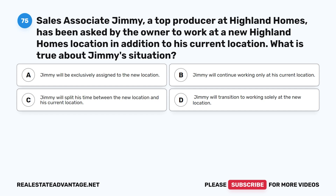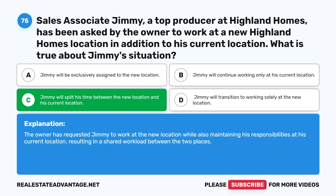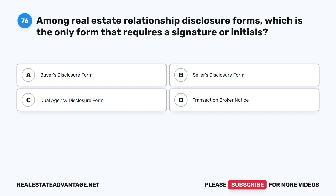Question 75: Sales associate Jimmy, a top producer at Highland Homes, has been asked by the owner to work at a new Highland Homes location in addition to his current location. What is true about Jimmy's situation? A. Jimmy will be exclusively assigned to the new location. B. Jimmy will continue working only at his current location. C. Jimmy will split his time between the new location and his current location. D. Jimmy will transition to working solely at the new location. The correct answer is C. The owner has requested Jimmy to work at the new location while also maintaining his responsibilities at his current location.